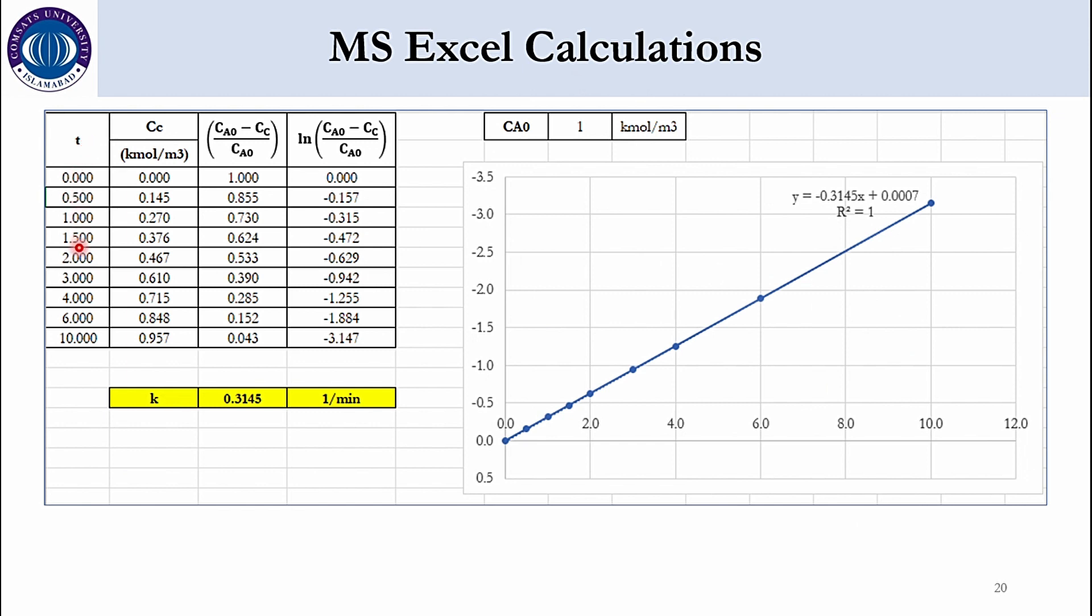How that you have time. You have the value of C of C. First you calculate CA0 minus C of C over CA0 values. Then you take natural log of it. And once you draw the plot between time and this natural log. You get the straight line. And the slope of that line is minus 0.3145. And accordingly since it represents minus k. So k is actually equal to 0.3145. Which means that your specific reaction rate constant value is 0.3145 per minute. Because it is a first order system. So the unit will be per time. So 1 over minute. So this is the overall representation of how to calculate the specific reaction rate constant for the system.